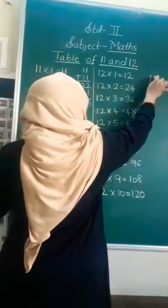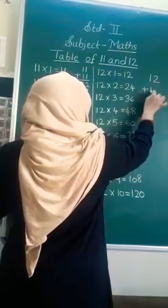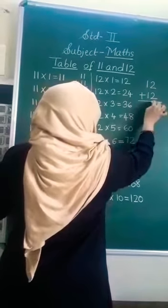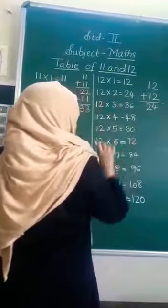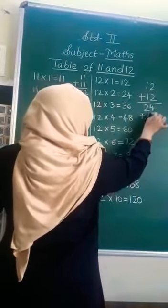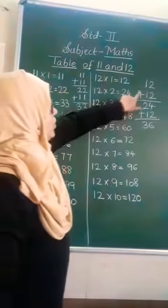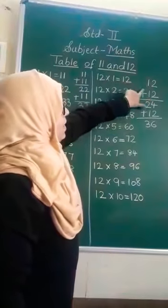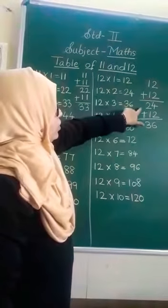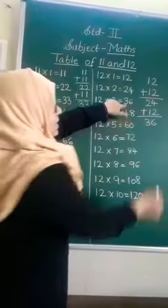Now how you will prepare table of 12? Take 12, add one more 12, it will become 24. Again you add one more 12, so it will become 36. 12 plus 12 equals 24. 24 plus 12 equals 36 and so on.